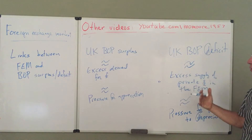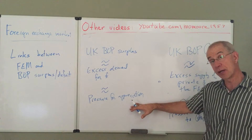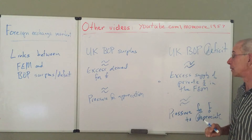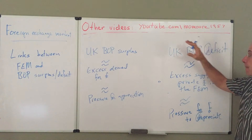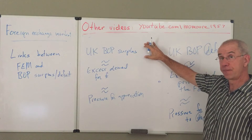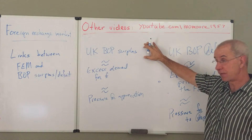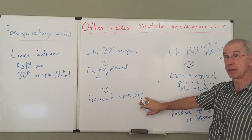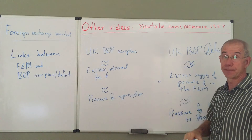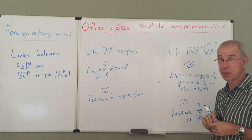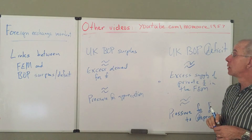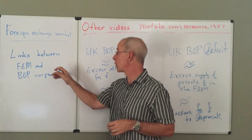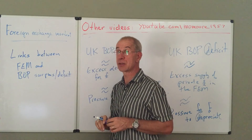With flexible exchange rates, this pressure for appreciation will be allowed to take place. Otherwise, if you have a fixed exchange rate where the government is intervening, this appreciation is not allowed to occur because the central bank intervenes in the foreign exchange market. So this is a quick overview of the relationship between foreign exchange markets and balance of payments surpluses and deficits.